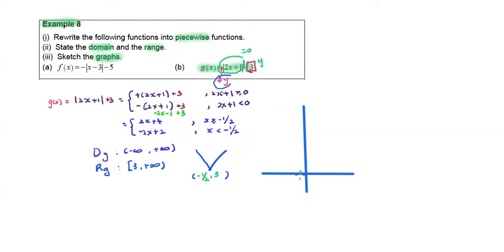Plot negative half, 3. One, two, three. This is the point: negative half, 3. Draw a V-shaped graph. Label the graph as function g.